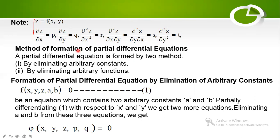Now, how to form a partial differential equation from a given equation. We use two methods: one is by eliminating the arbitrary constants, and the second is by eliminating the arbitrary function. We differentiate the given equation partially with respect to x and y, then eliminate the arbitrary constants to obtain the partial differential equation.